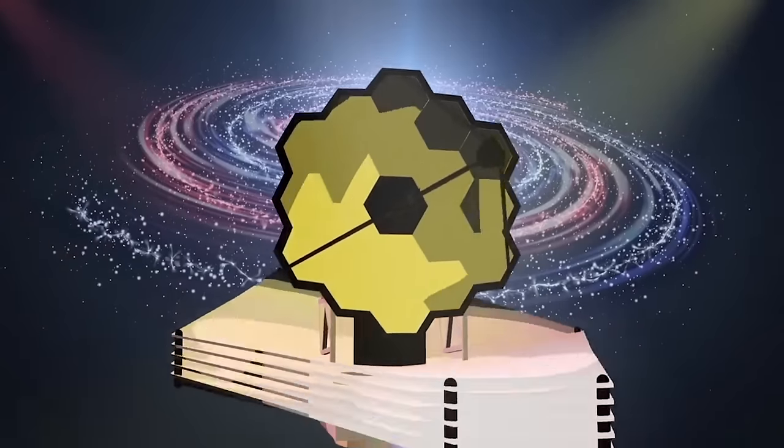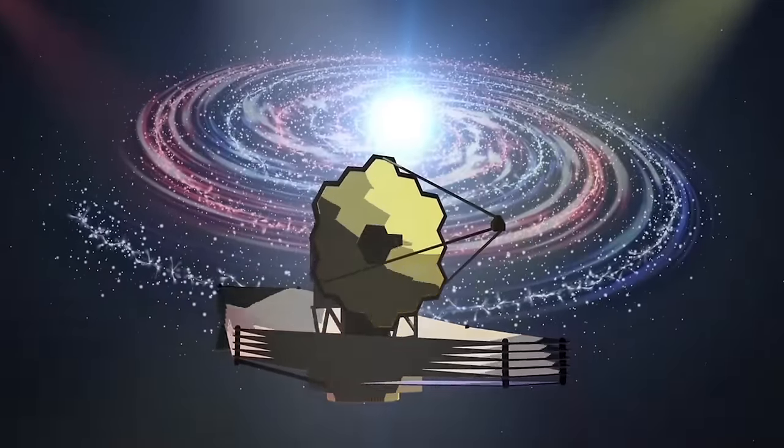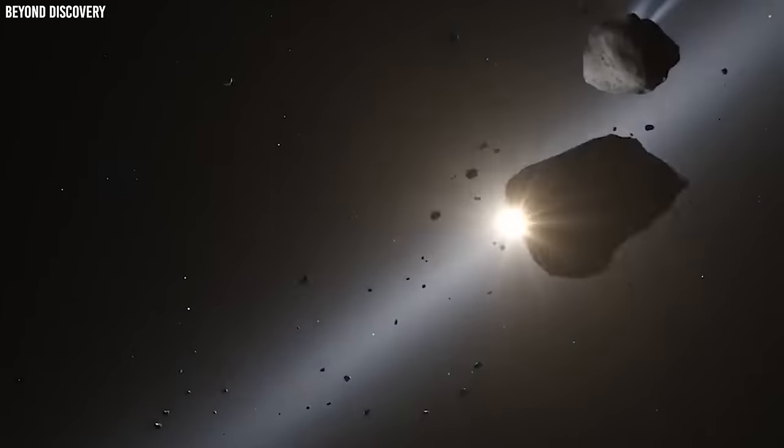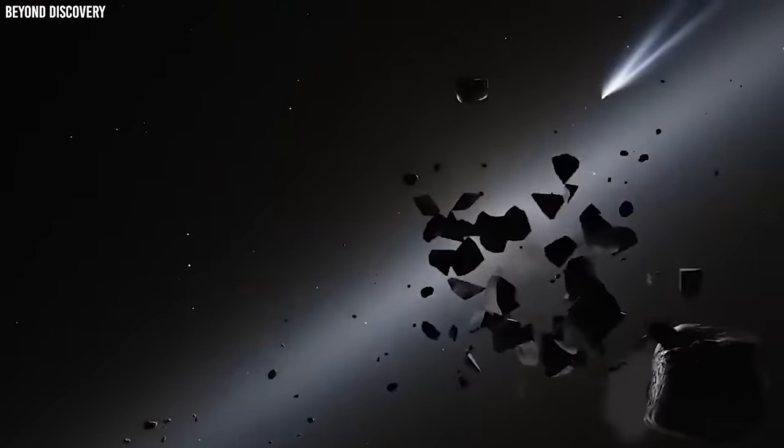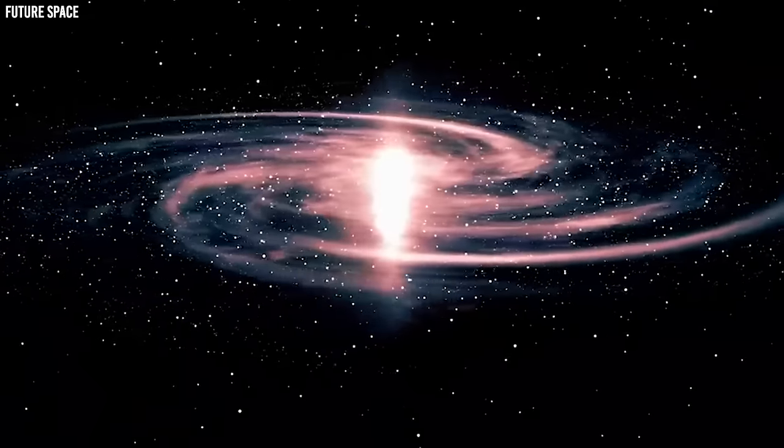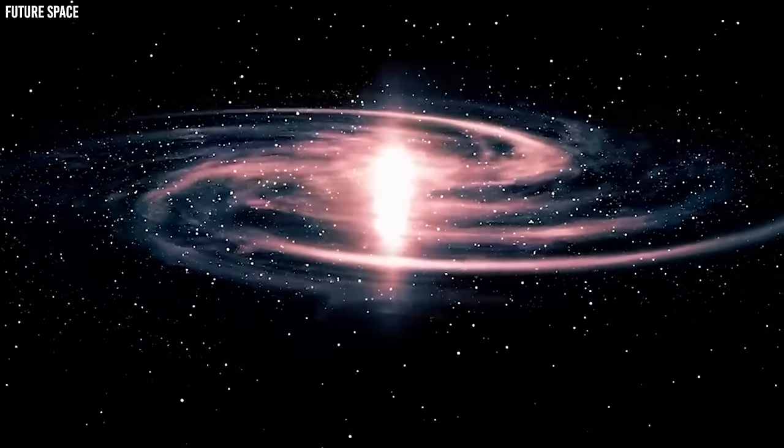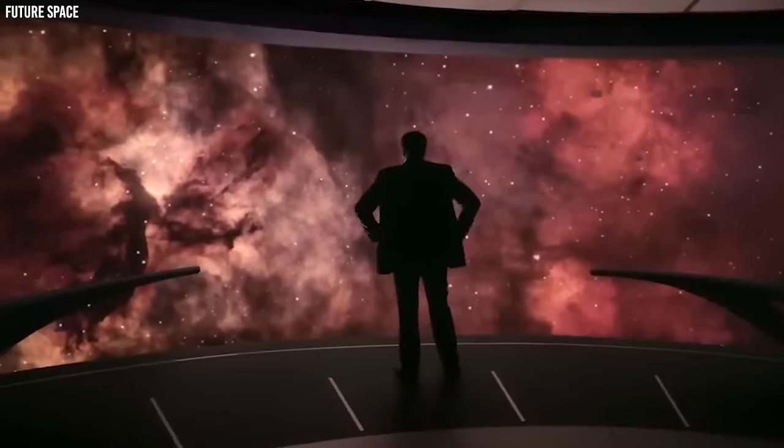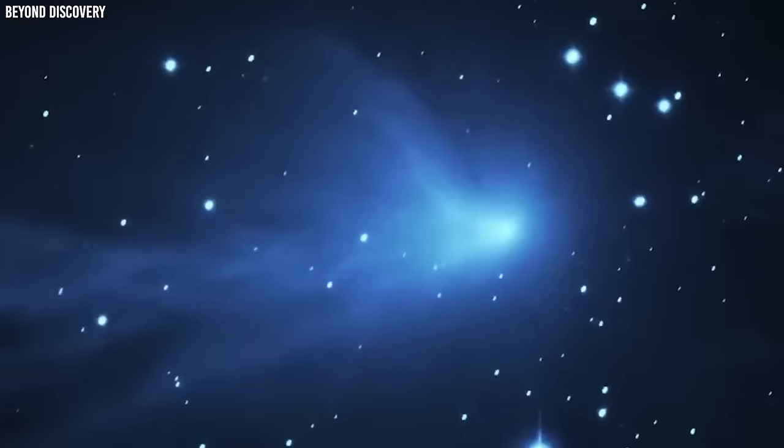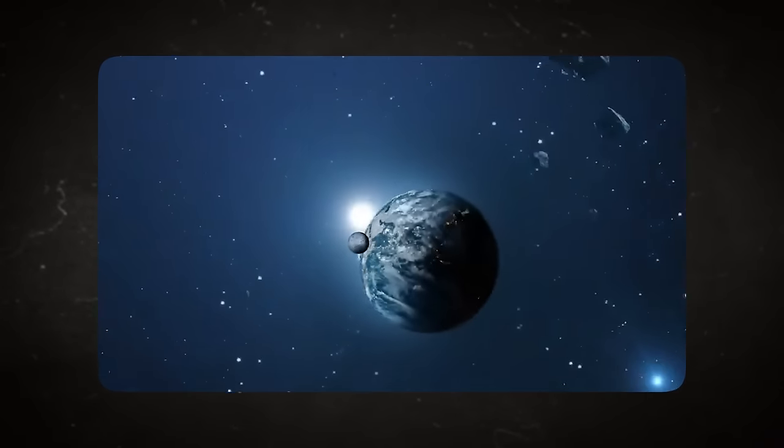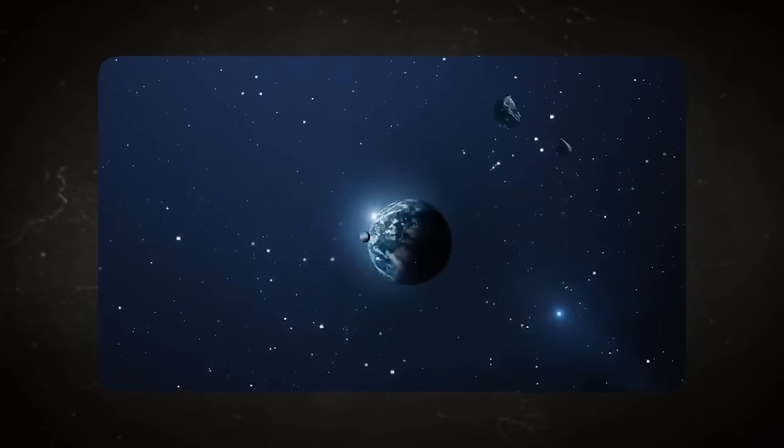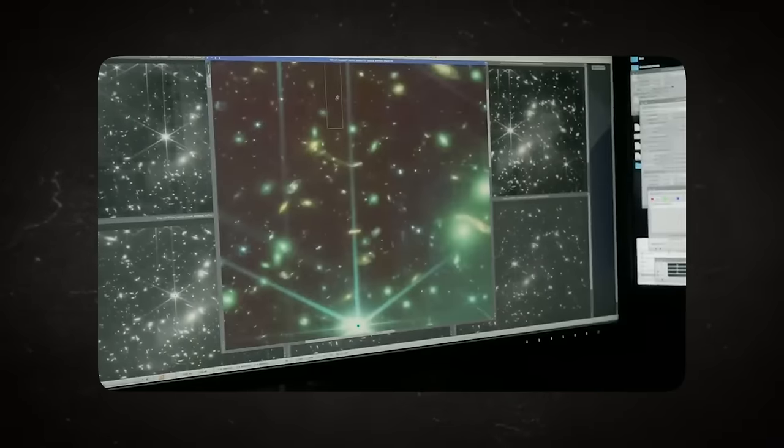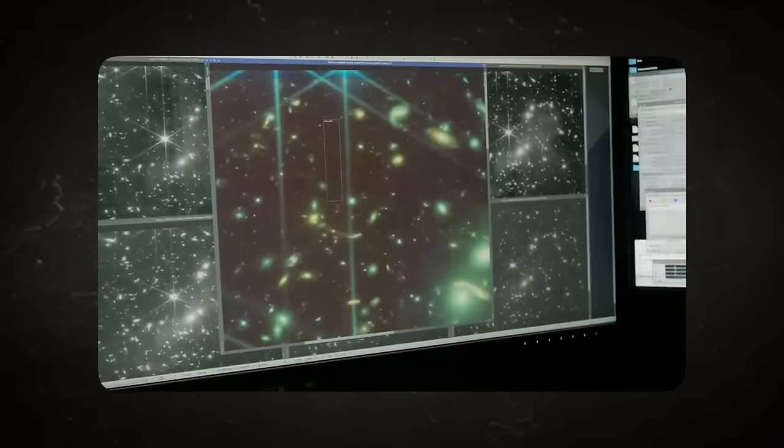The James Webb Space Telescope has captured some surprising images that challenge what scientists thought they knew about the universe's origins. The images show galaxies that seem too small, too smooth, too old, and too many compared to what the Big Bang theory suggests. This is a big deal because, for a long time, most scientists thought the Big Bang theory was the absolute truth about how the universe started. But these unexpected galaxies are throwing a curveball into that idea.